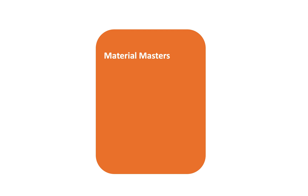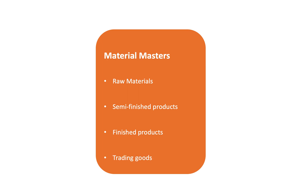S4HANA has many material types available, but in materials management there are a few we use most frequently. First, raw materials are only purchased externally and then processed in-house. Next, semi-finished products are either purchased externally or manufactured in-house. They are often processed further to add value and turn them into finished goods to be sold. Finally, trading goods are products bought externally and sold to customers without needing to add value. Semi-finished products, finished products, and trading goods have their own characteristics and roles within the organization.